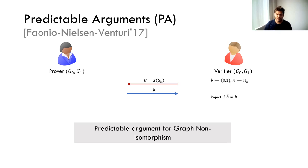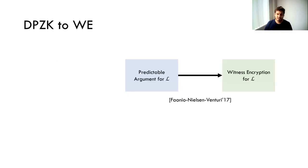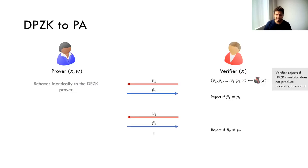Farnio, Nielsen and Venturi showed that predictable arguments for any language imply witness encryption. So all we need to show is that DPZK for a language implies a predictable argument. The transformation is straightforward: the verifier runs the simulator on statement x, obtains a simulated transcript and the verifier's random coins, and as a first step rejects if the simulated transcript is not accepting. It then sends v1 from the simulated transcript. The prover in this predictable argument behaves identically to the DPZK prover — the prover doesn't change at all; only the verifier uses the simulated messages as its verifier messages.